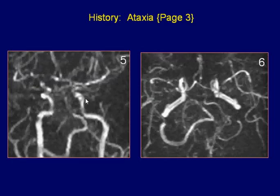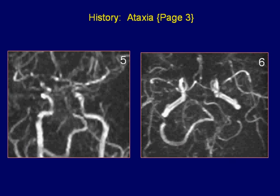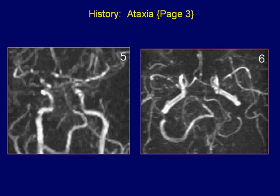MR-angiogram of the brain MIP images reveal a poorly delineated distal basilar artery. Both vertebral arteries and the proximal basilar artery demonstrate normal flow signal. Compatible with basilar artery stenosis causing superior cerebellar artery infarct.